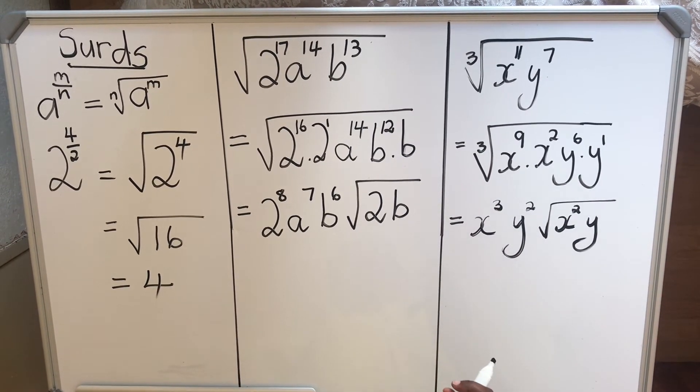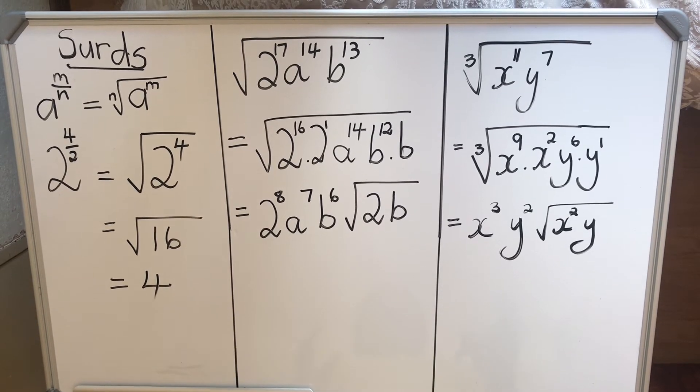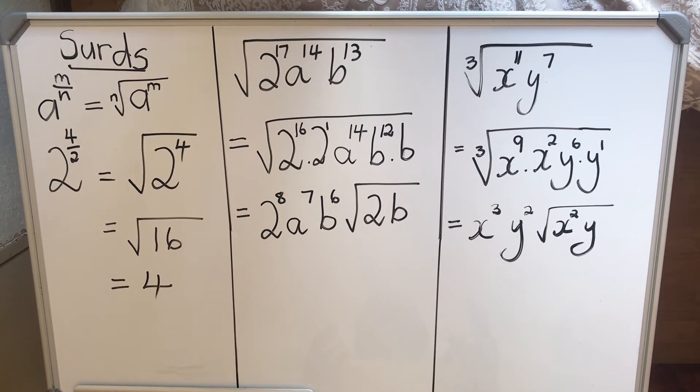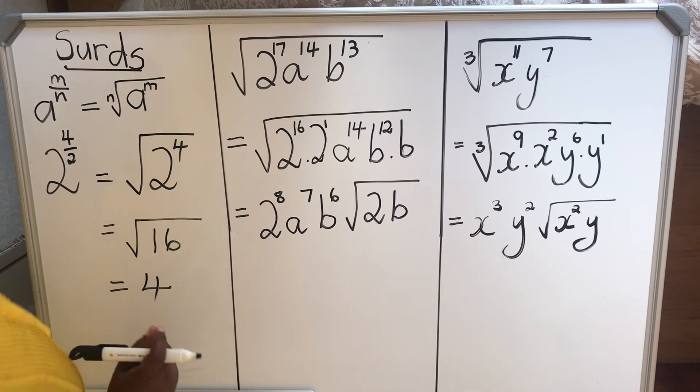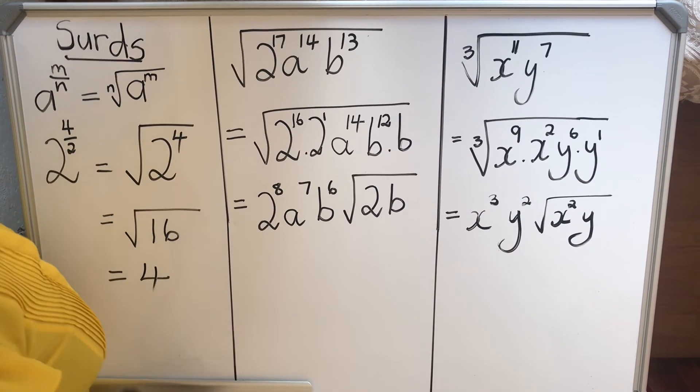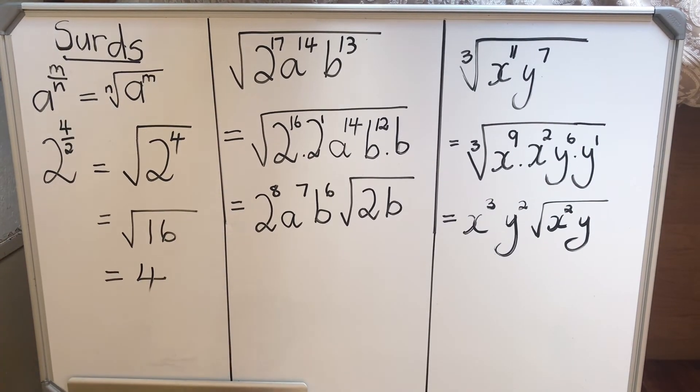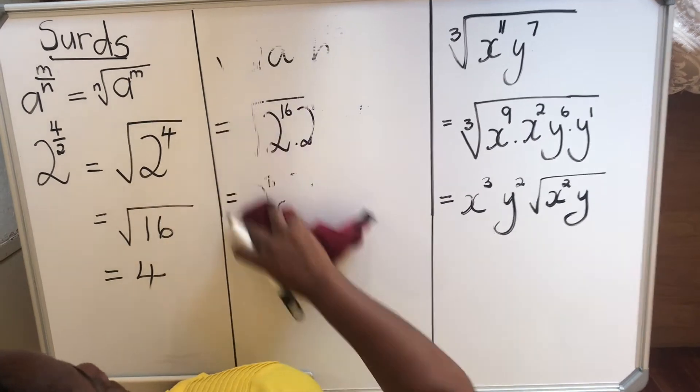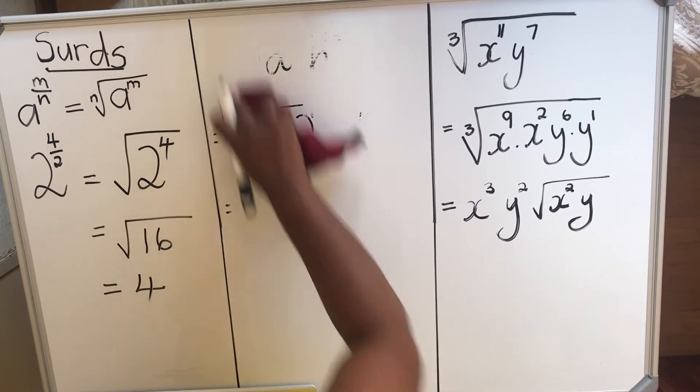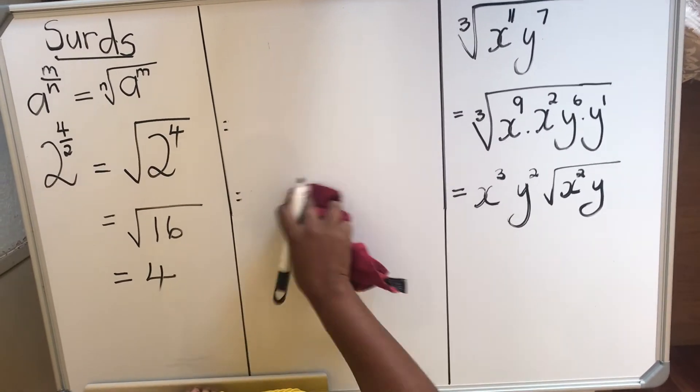So I want to look at a typical exam question that you will get. This is a grade 11 question. So I'm going to use one of the examples that I got from a previous paper, and then we'll see how we go about solving that using surds.